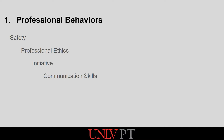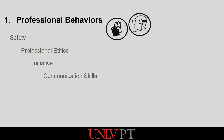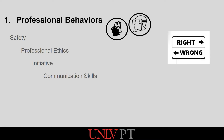For the first of the three CIET categories, professional behavior, there are four subsections. The first is safety, which measures the student's ability to maintain safety for themselves, others, and patients. The second category is professional ethics, which rates the student's compliance with ethical and legal standards, as well as rules and regulations.